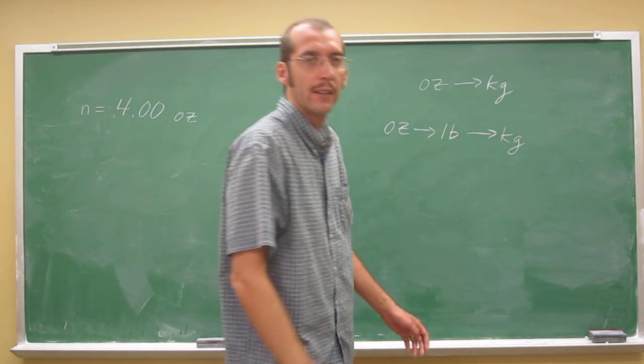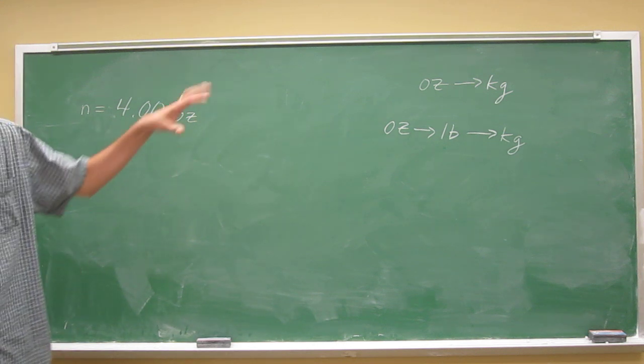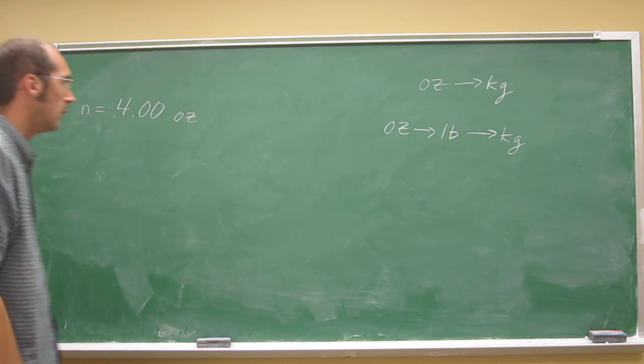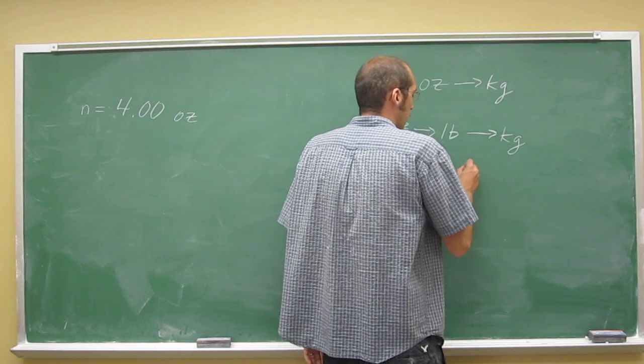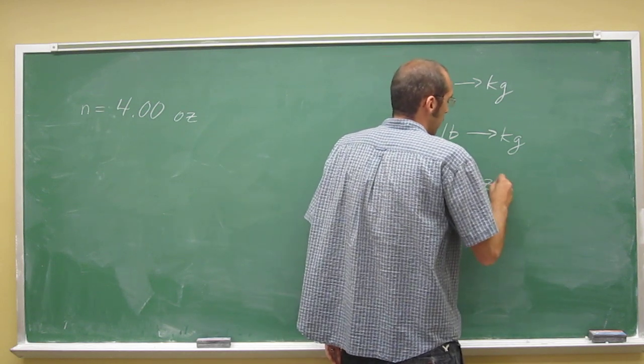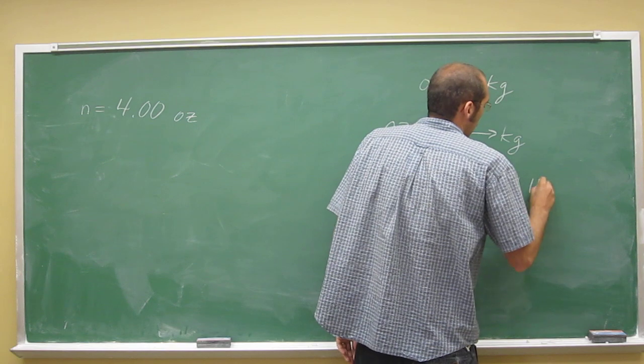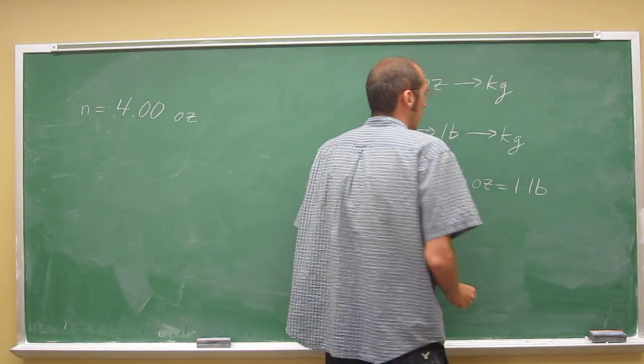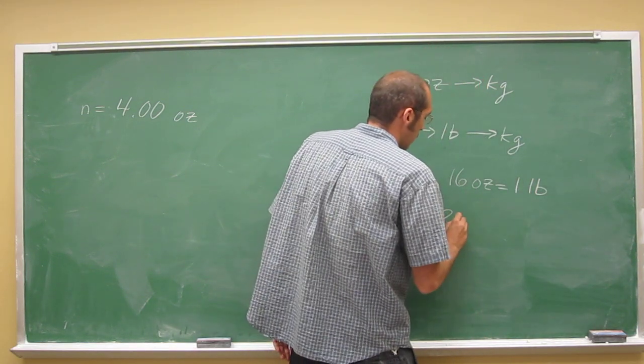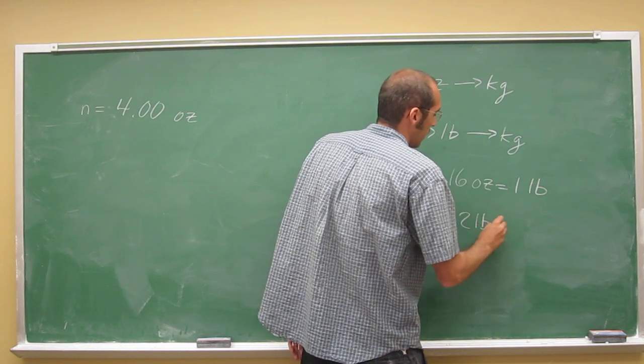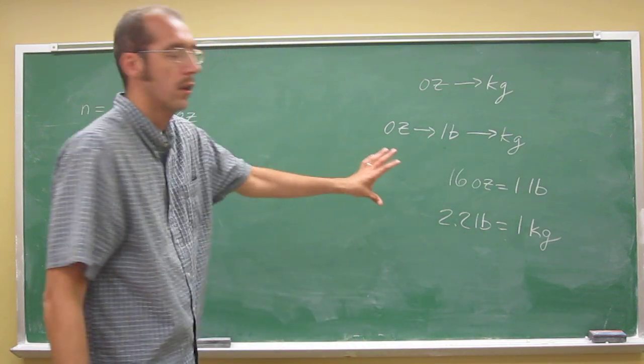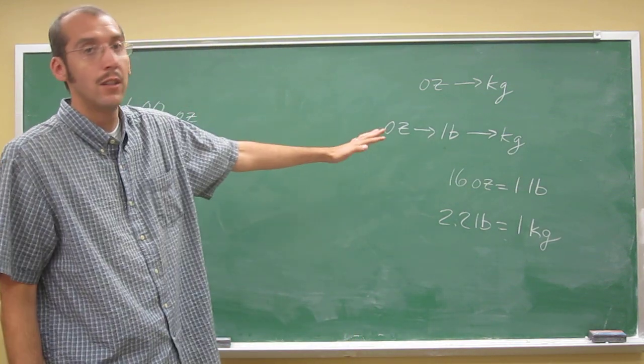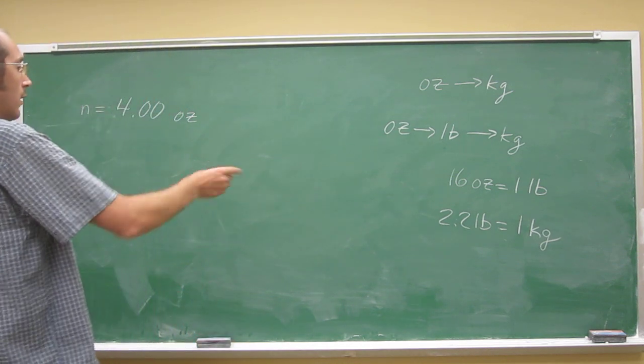So in fact, this is the cool thing about conversion factors is you can use as many as you need. Okay, so if we look at our conversion factor from ounces to pounds, 16 ounces is one pound. Okay, and pounds to kilograms is 2.2 pounds equals one kilogram. So you just use those two conversion factors in succession to cancel out your ounces and get kilograms.